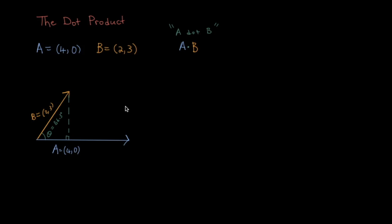A dot B is the vector A times the component of B that is parallel to A. That's these two vectors here times each other.